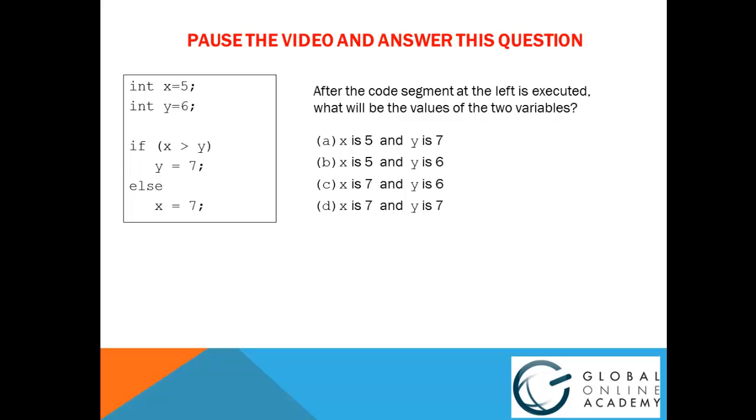Welcome back. The correct answer is C. X is 7 and Y is 6. Let's look at the execution. We start off by making X equal to 5 and Y equal to 6. Next, we check to see if X is greater than Y. Since 5 is not greater than 6, we skip over the if part and execute the statement after the word else, which changes the value of X from 5 to 7.